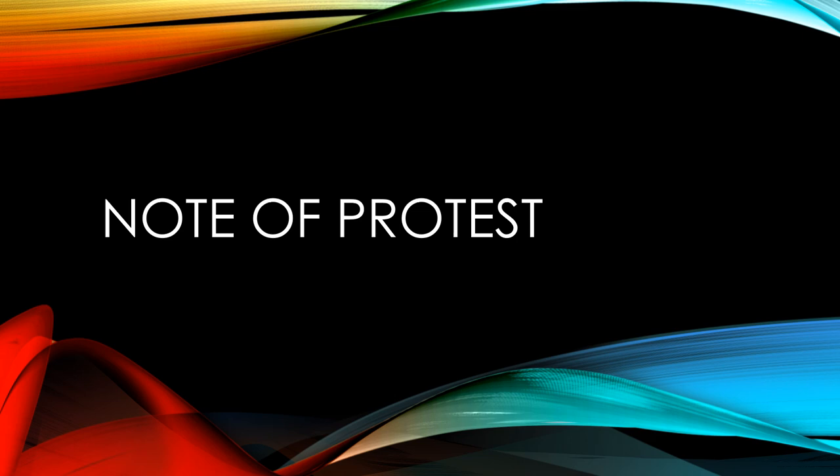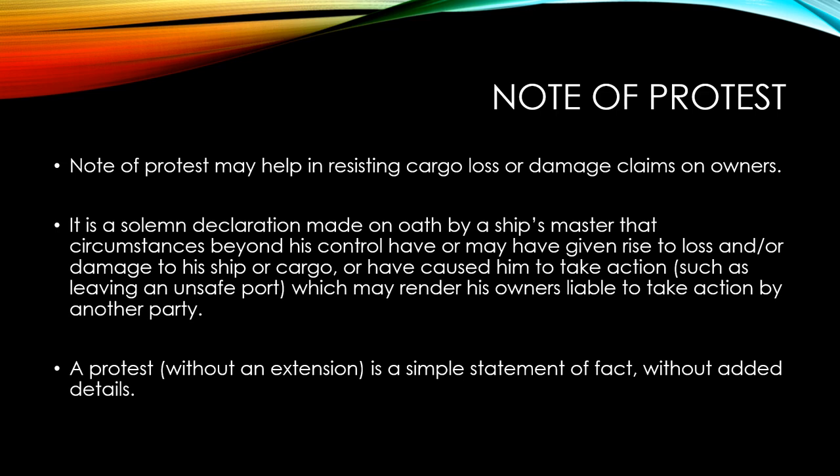Today we're going to talk about the Note of Protest — what it is used for, how it is lodged, and I'll also show you an example of how it is written up. This is in the topic of maritime law, so if you are preparing for the subject of maritime law, this will be a useful video. A Note of Protest is basically a solemn declaration made on oath by a ship's master that circumstances beyond his or her control have or may have given rise to some kind of loss and/or damage to the ship or cargo, or have caused him to take action — such as leaving an unsafe port — which may have rendered his owners liable to be taken action against by another party.